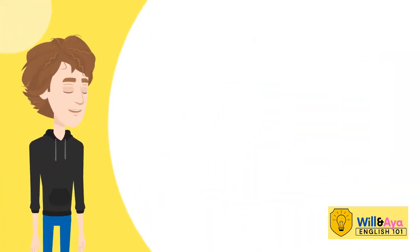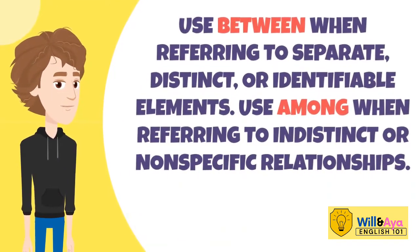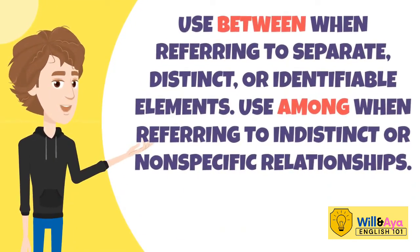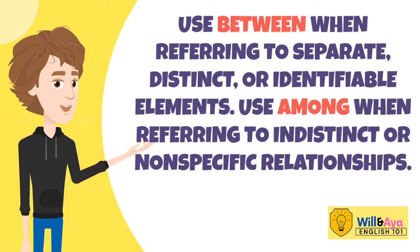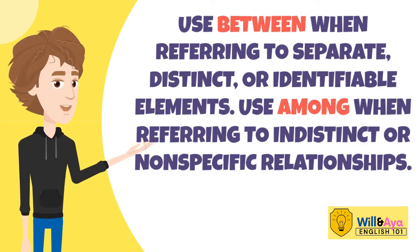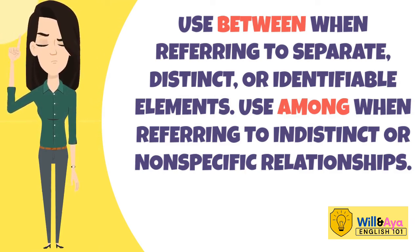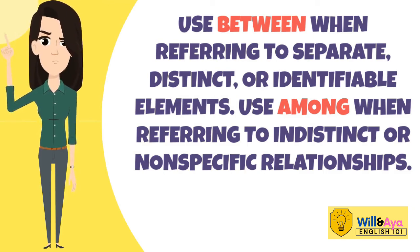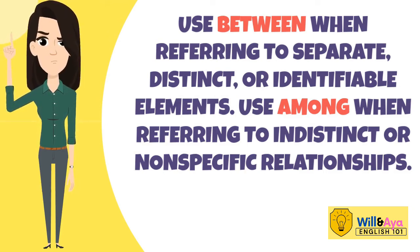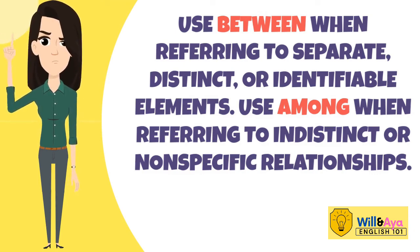In summary, use 'between' when referring to separate, distinct, or identifiable elements. Use 'among' when referring to indistinct or nonspecific relationships. Ditch the idea that 'between' is only for two elements and 'among' is used when comparing three or more elements — that is not really the case.